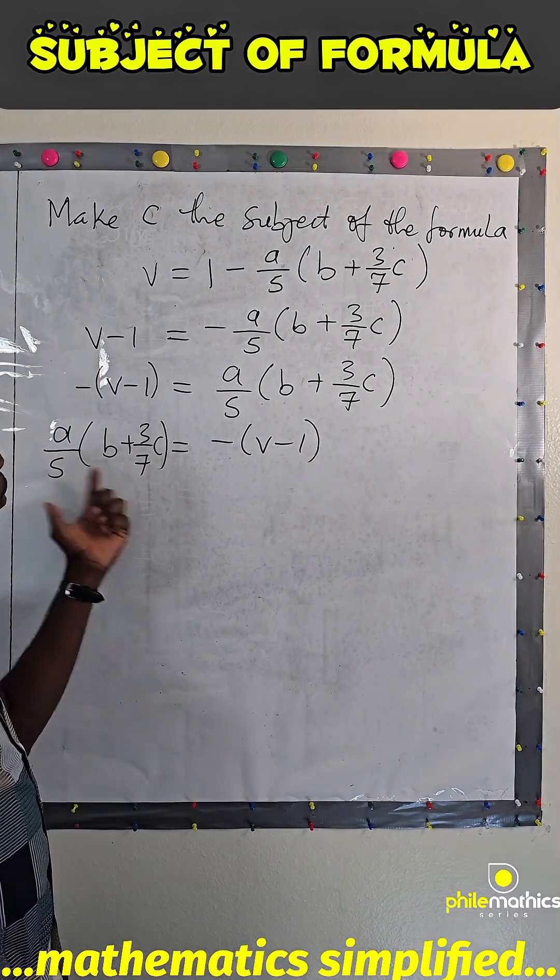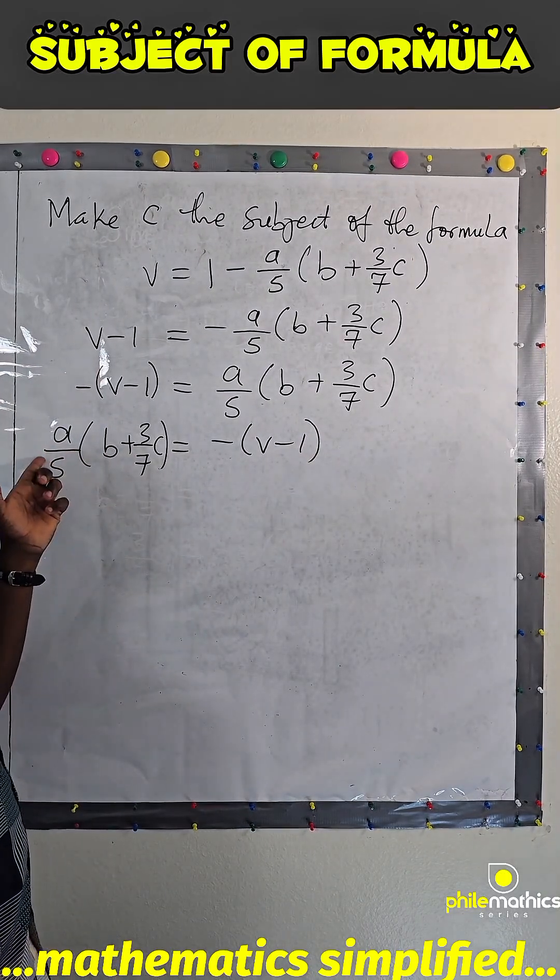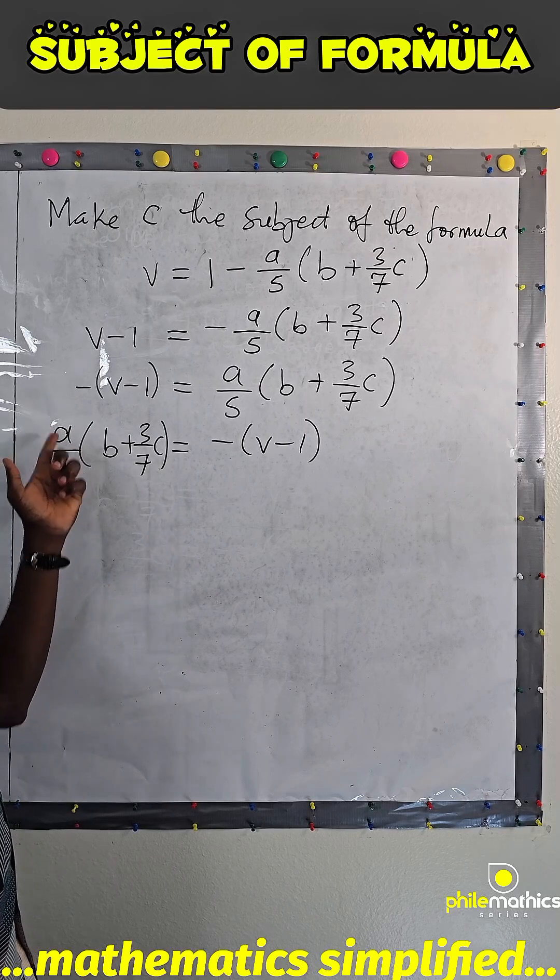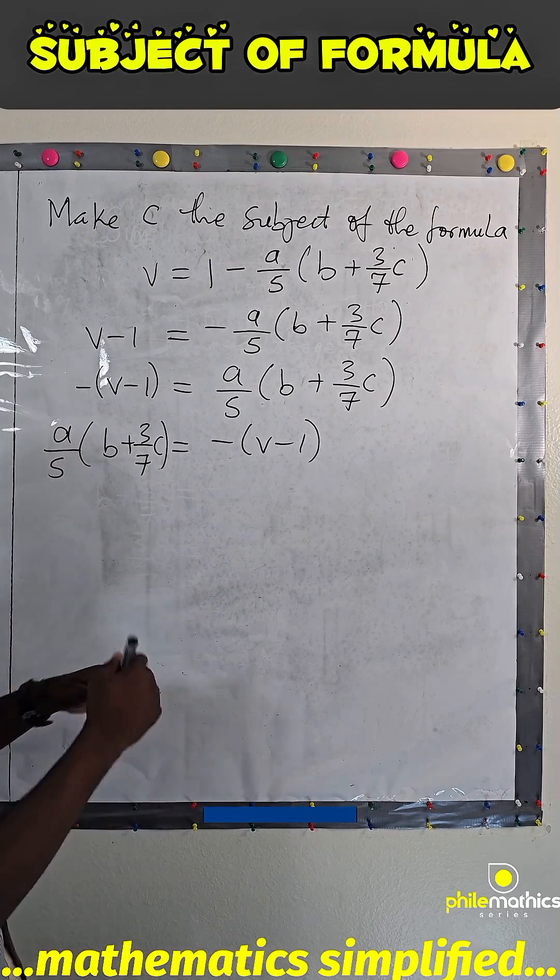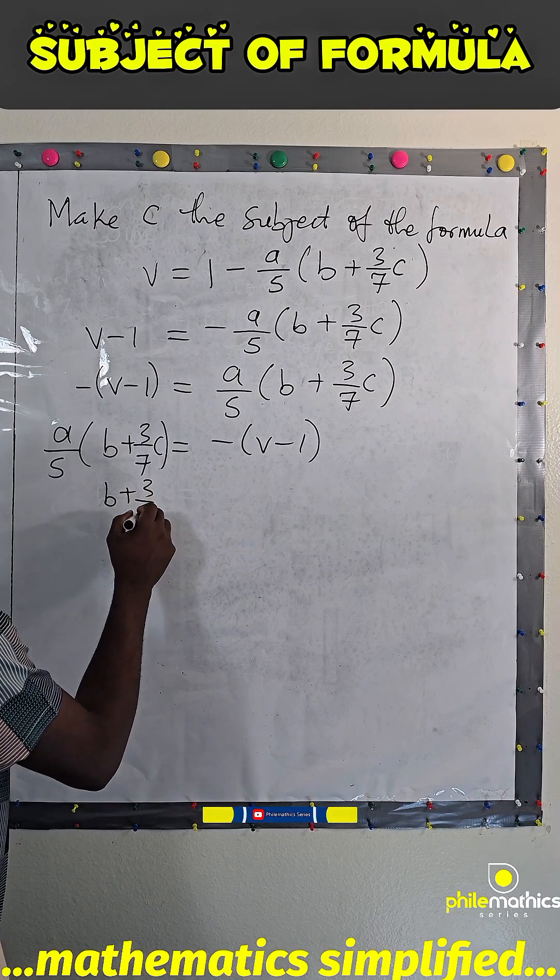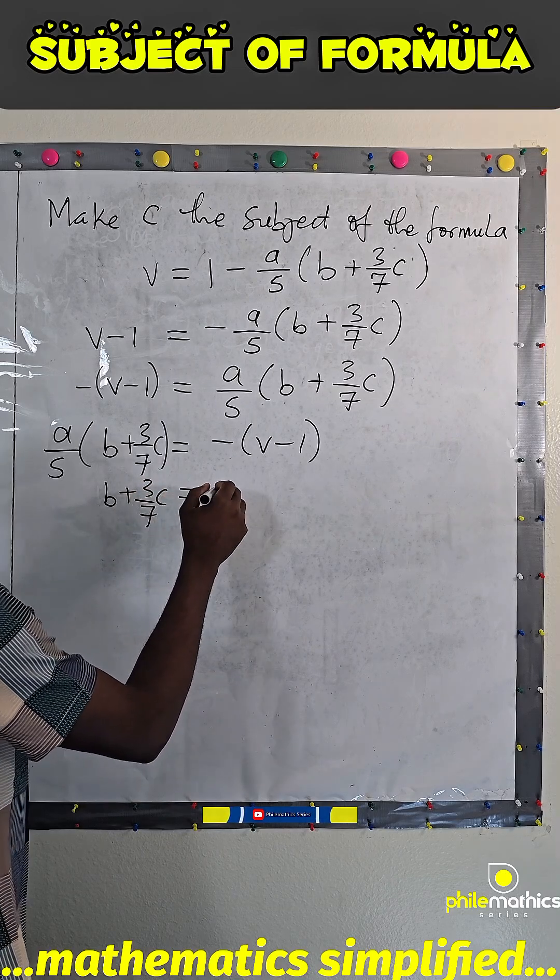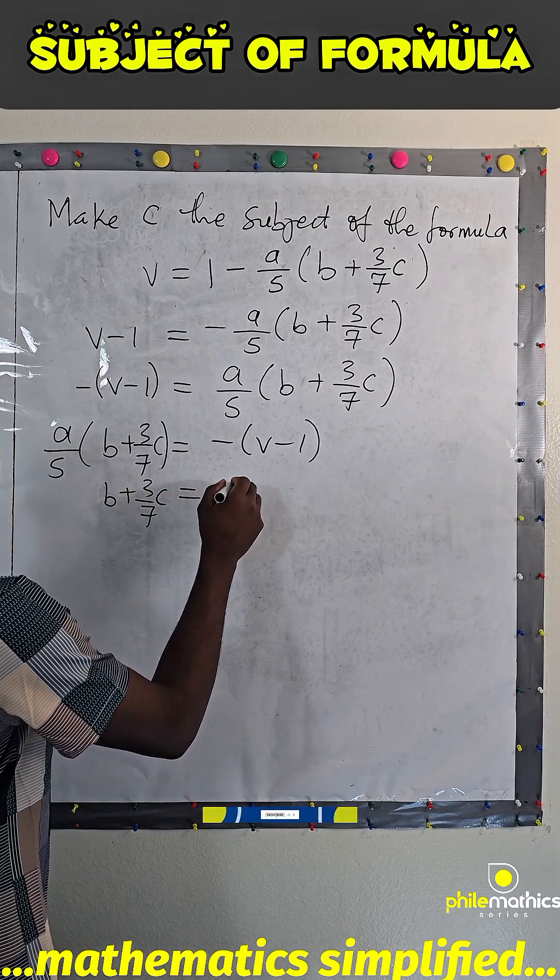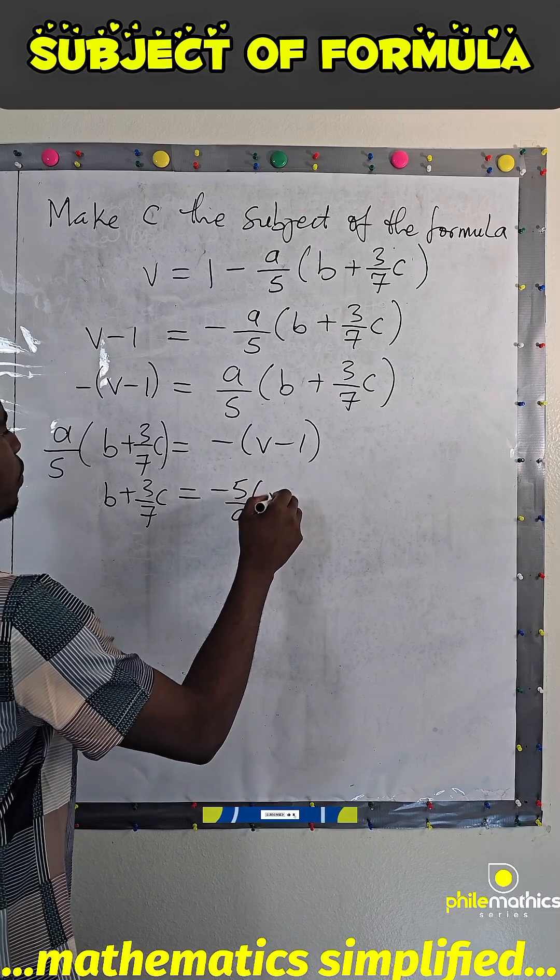Now, I can multiply both sides by 5 over A to eliminate this A over 5 on the right-hand side. So, if I do that, I will get B plus 3 over 7, C equals minus 5 over A, V minus 1.